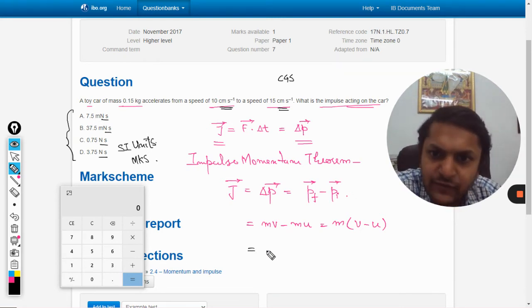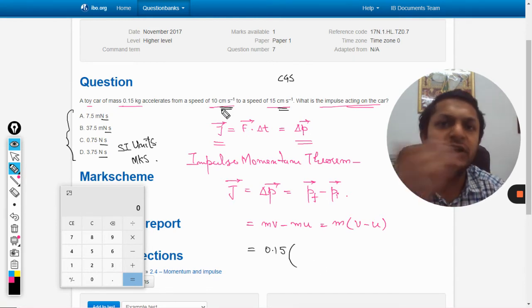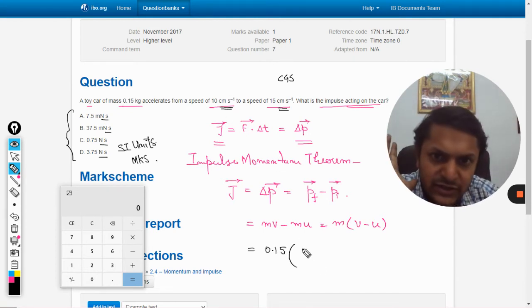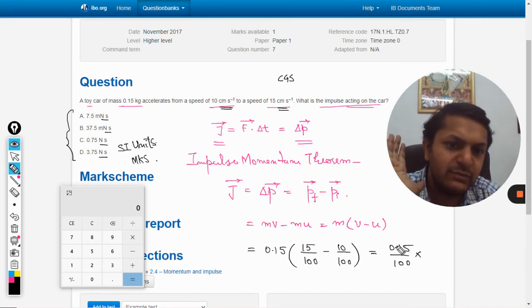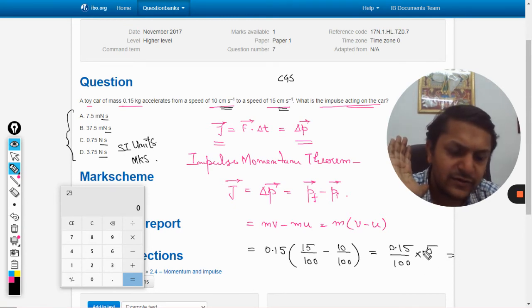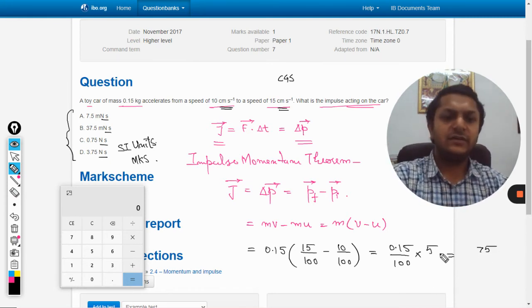How we will be doing that? Now the mass will be 0.15, and velocities in centimeter we will divide by 100. So 15 divided by 100 minus 10 divided by 100. I will take 100 common, that will be the easiest method to do. And 15 minus 10 is 5. So now it is 75.